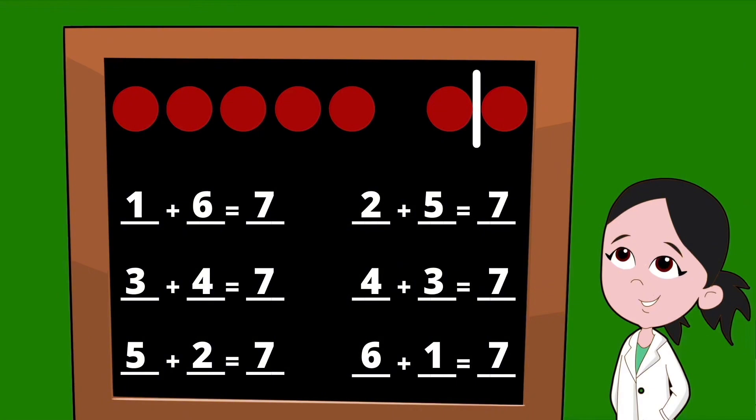There you have it — our six partners for the number seven. We have a one and a six, a two and a five, a three and a four, a four and a three, a five and a two, and a six and a one. These are all the partners for the number seven.